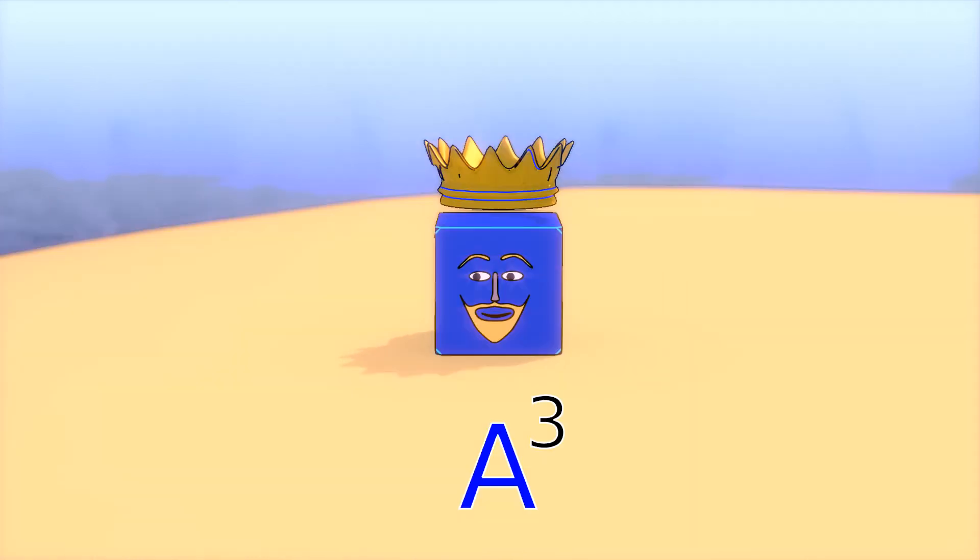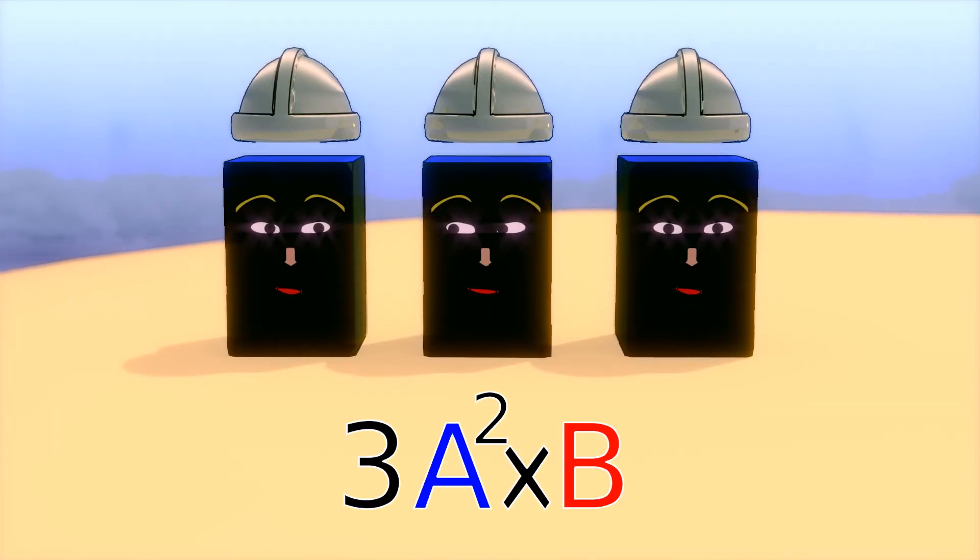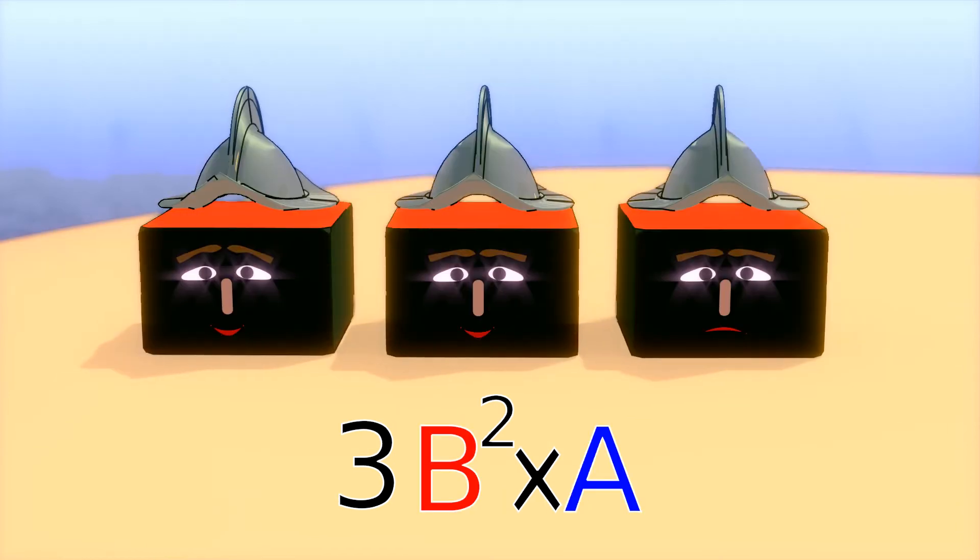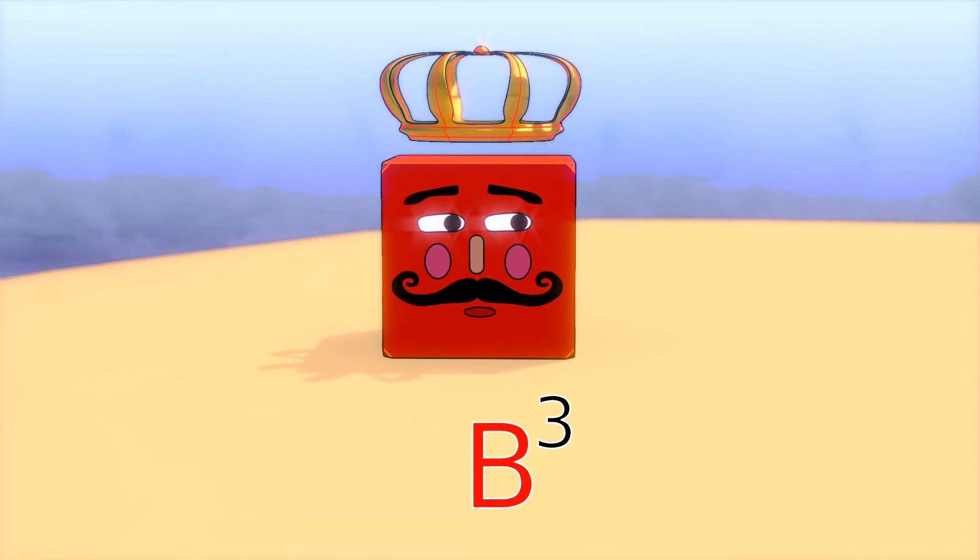That is, A-cubed plus 3 times A-squared times B plus 3 times B-squared times A plus B-cubed.